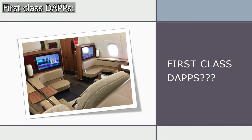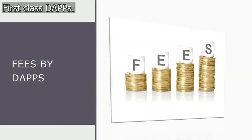First-class dApps means that each dApp has its own blockchain with a specific set of nodes it runs on, and typically its own dedicated CPU thread. This way, dApps perform and scale far better. Fees are also paid directly to nodes by the dApps instead of by the end user.